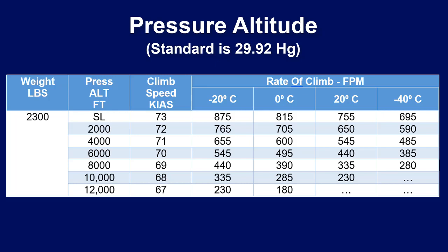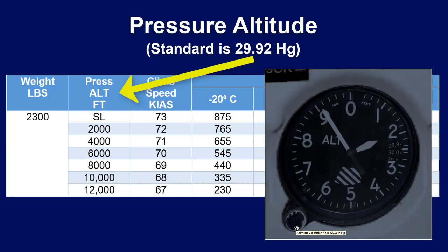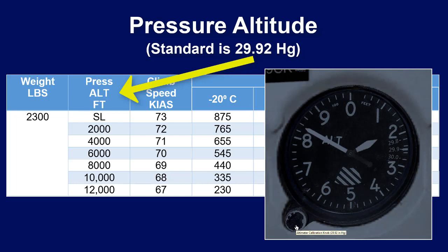If your conditions vary from standard, the pressure altitude column on charts represents the altitude at 29.92 inches of mercury. If you set your Kollsman window to 29.92 while flying, you will know the pressure altitude. After consulting the chart, set the knob back to the correct setting you had before making the change.